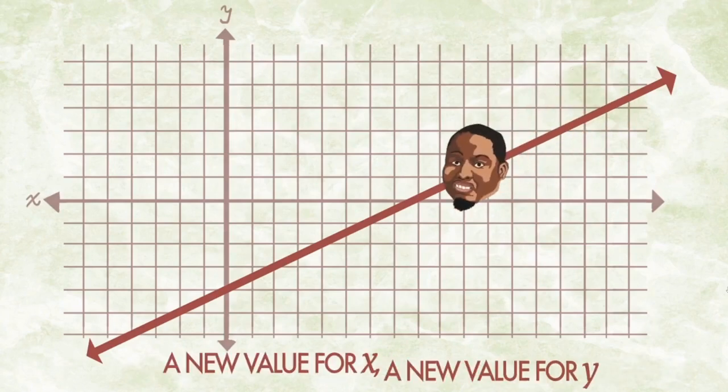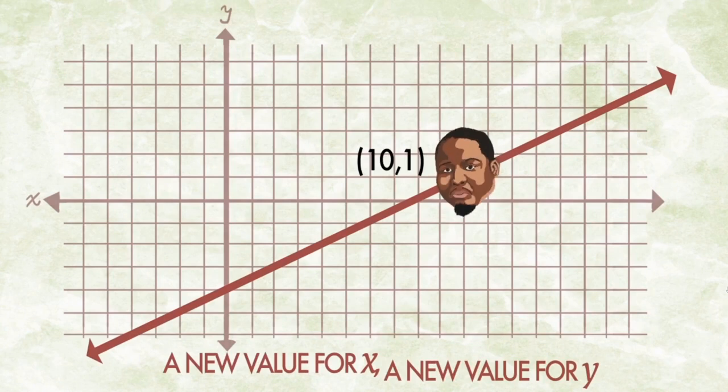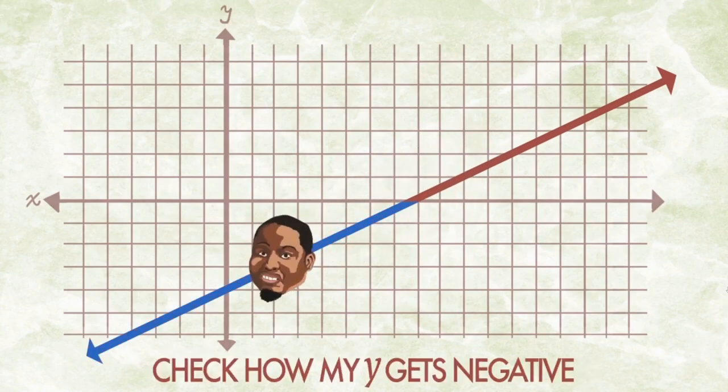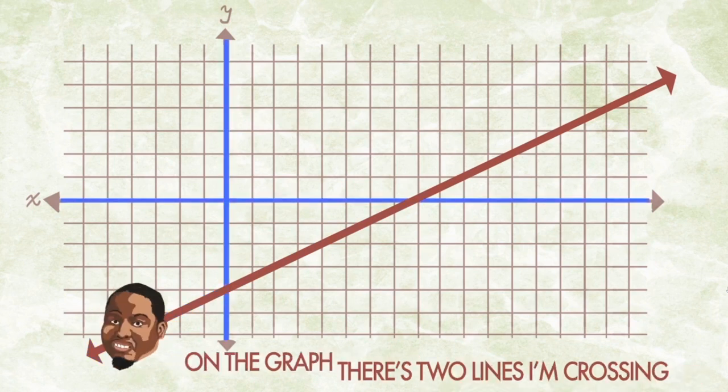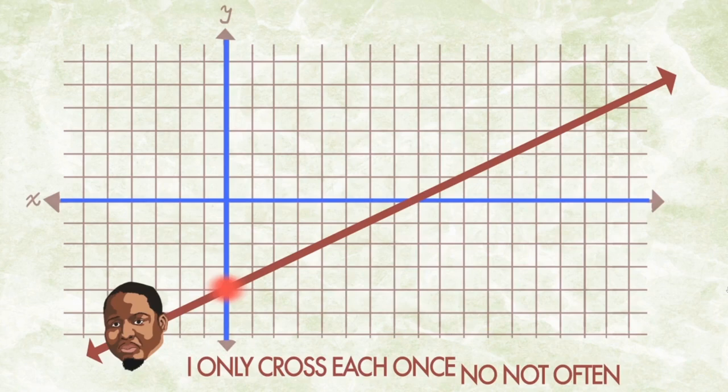Go for a ride, a new value for X and new value for Y. Check how my Y gets negative and my X gets negative. I'm the best who ever lived. On the graph there's two lines I'm crossing.